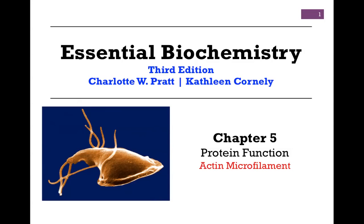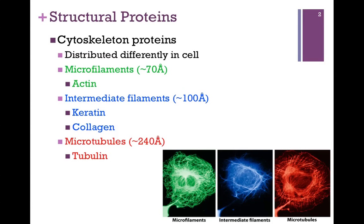In our next series of lessons on protein function from Chapter 5, we want to look at some structural proteins. We'll look first at the actin microfilament. Here we have listed the cytoskeletal or structural proteins we'll look at in this chapter, listed in order of increasing size. First, microfilaments composed of actin, at about 70 angstroms. Then at about 100 angstroms are the intermediate filaments — particularly keratin and collagen. And lastly, the largest are the microtubules composed of tubulin, at about 240 angstroms.